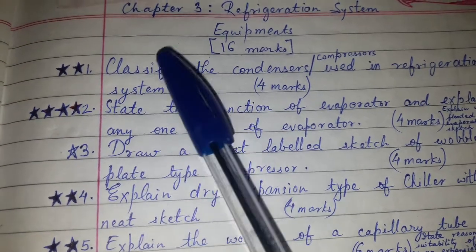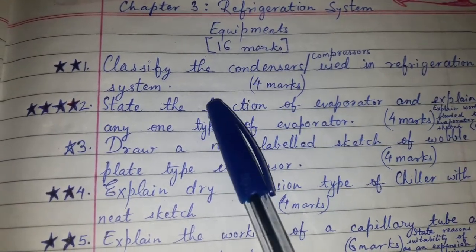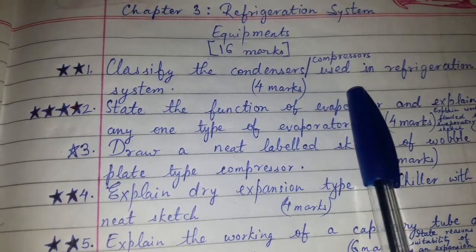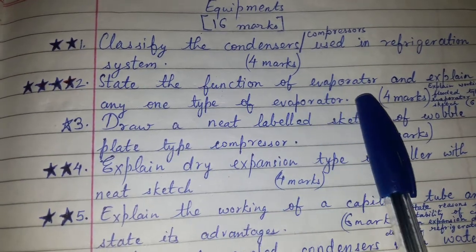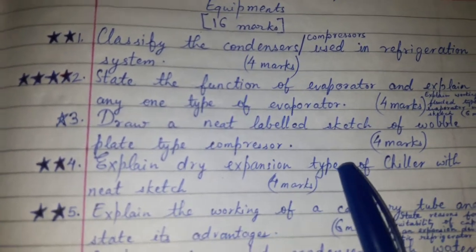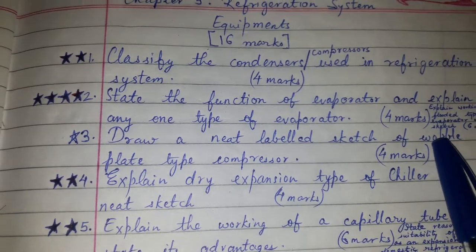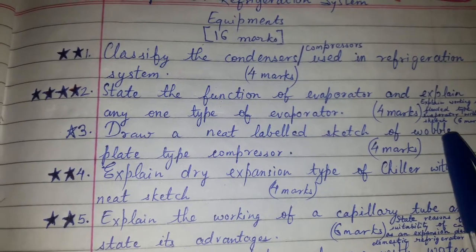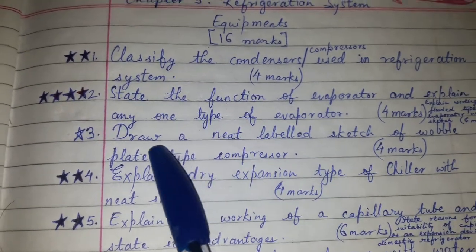Starting with the first important question: classify the condensers used in refrigeration system — or it may be asked as classify the compressors used in refrigeration system — for four marks. Next: state the function of evaporator and explain any one type of evaporator. This question can also be asked with a specific evaporator name, for example, explain working of flooded type evaporator with sketch, which was asked for six marks.